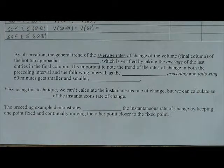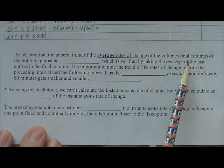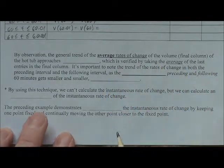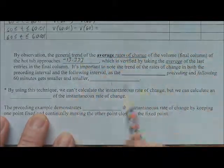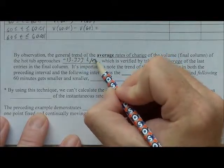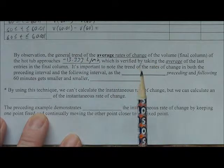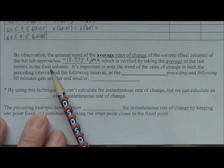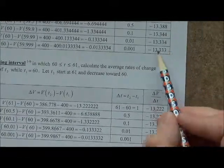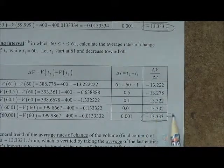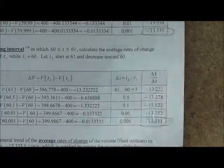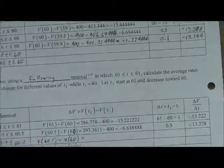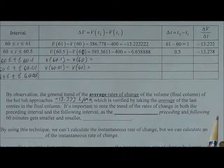So by observation, the general trend of the average rates of change of volume, the final column of the table there, of the hot tub approaches, as you can see, negative 13.333 liters per minute, which is verified by taking the average of the last entries in the final column. So what we're going to be doing is, if we take the average of the final two rates of change for the preceding and the following interval, take the average of those two values, that will give us a very good estimate for the instantaneous rate of change.